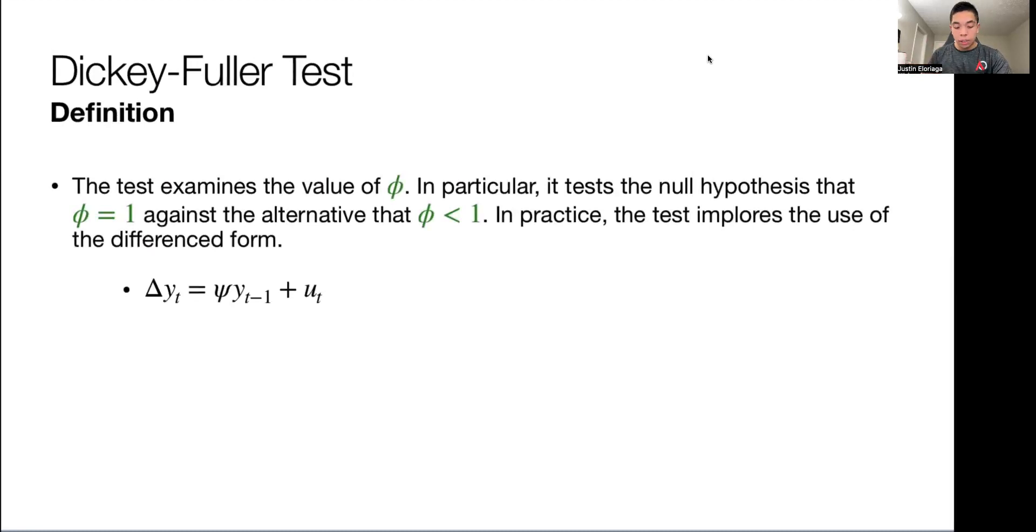You might ask, well, how was this derived? It's simple. You start from an AR(1). Say we have an AR(1), Yt is equal to phi Yt minus 1 plus Ut. Then I just subtract Yt minus 1 from both sides. And you have Yt minus Yt minus 1, that's for me to get the difference form. Phi Yt minus 1 minus Yt minus 1 plus Ut.